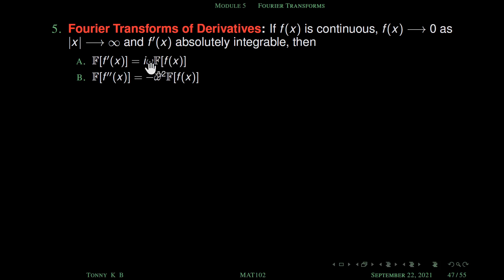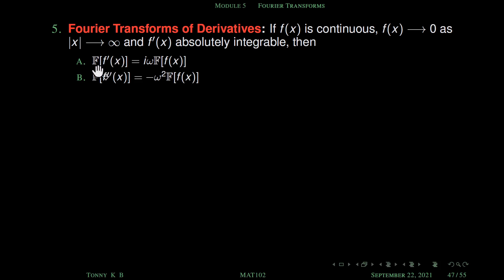Then we have to prove that the Fourier transform of f'(x) is equal to iω times F{f(x)}, and we can easily deduce the second result: the Fourier transform of f''(x) is equal to -ω² times F{f(x)}. Both results express the Fourier transform of derivatives in terms of the Fourier transform of f.